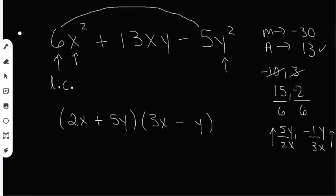But this is how you factor a multivariable problem. You start off with the rainbow method, and then after that you can do grouping or you can create your fractions. And I hope that helps.